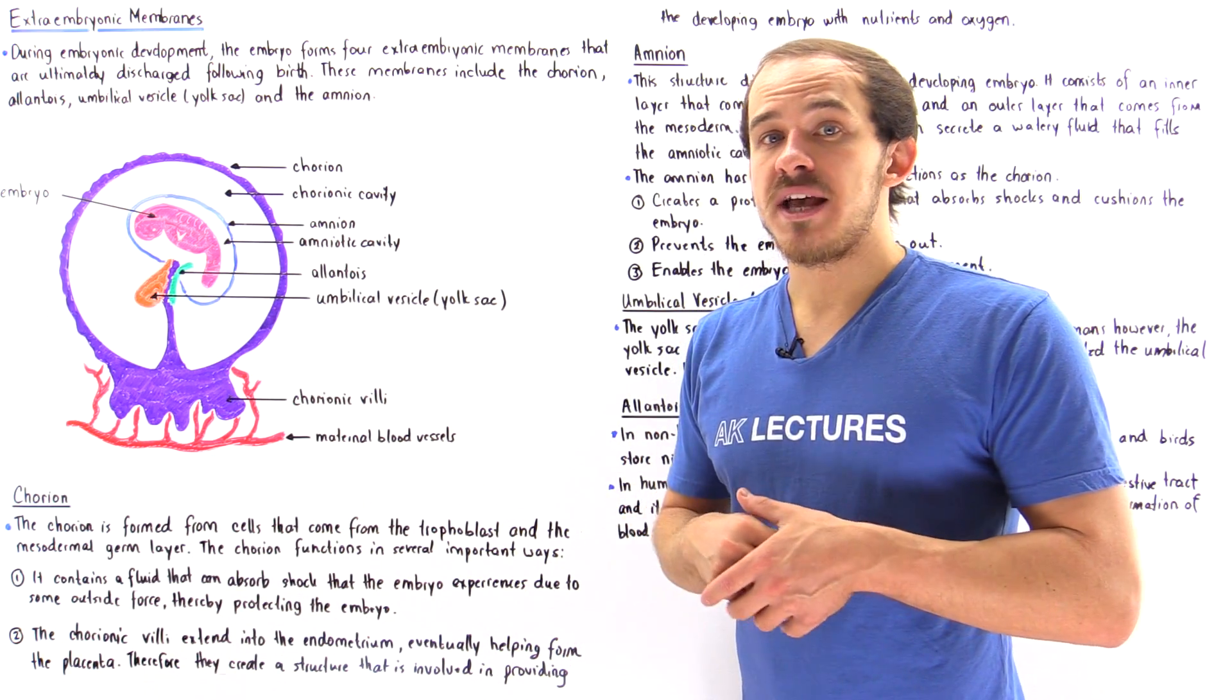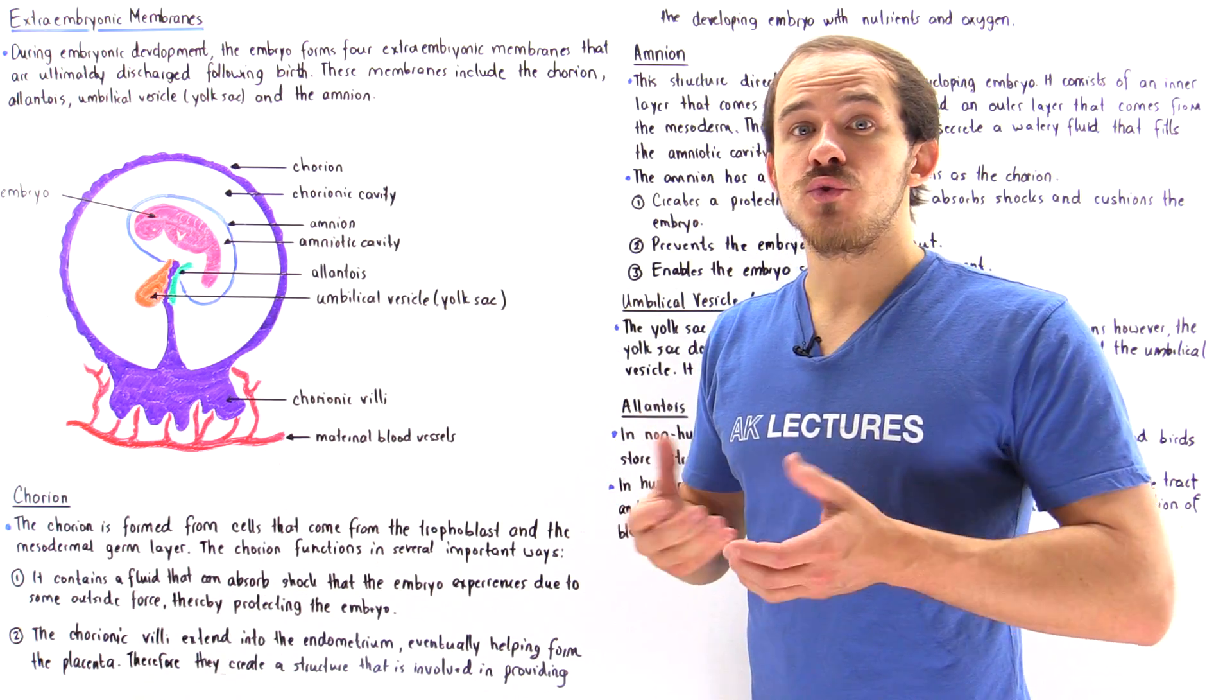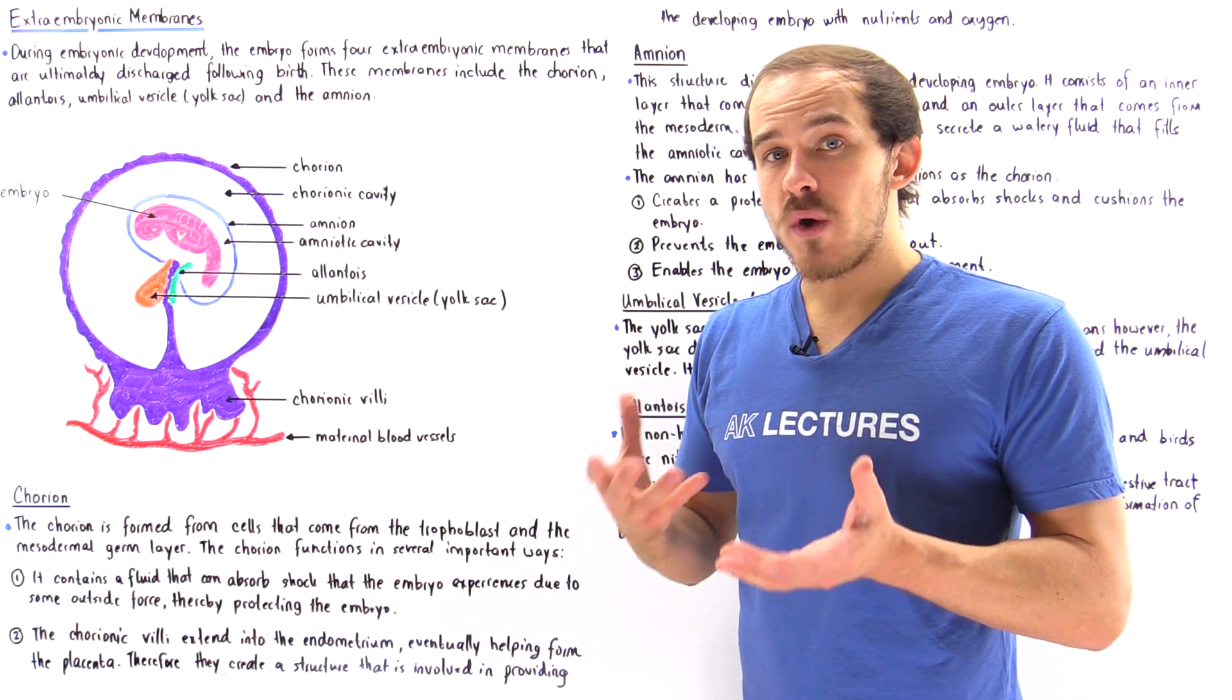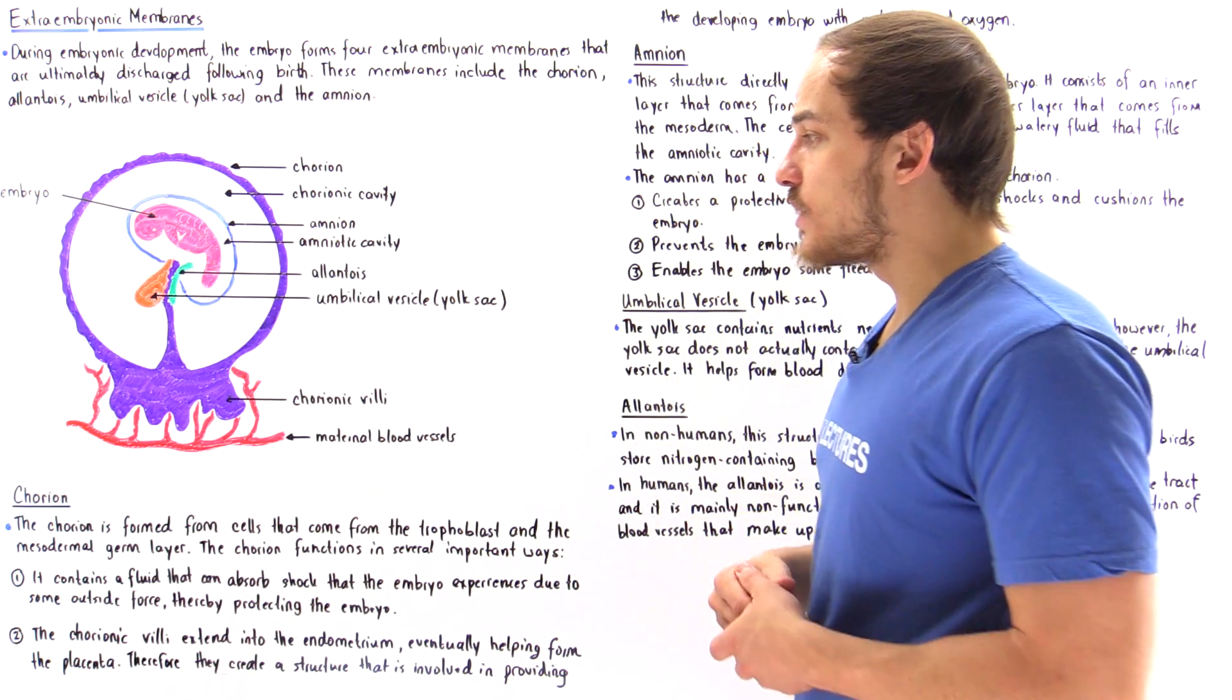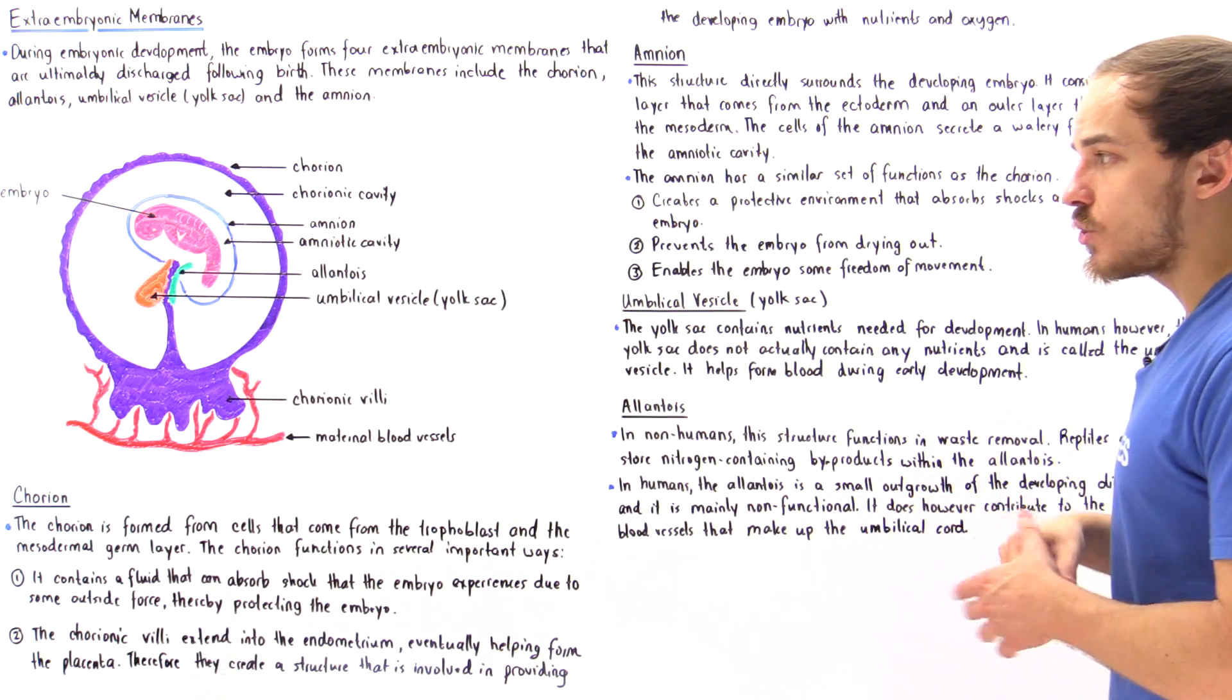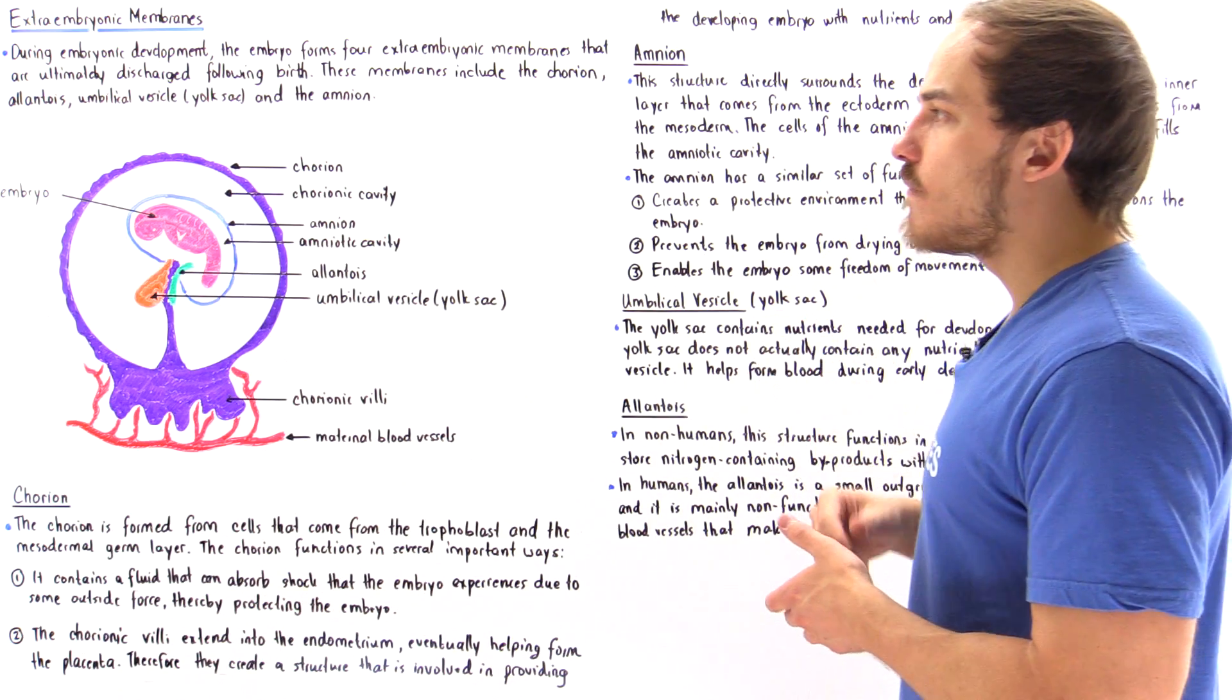And the placenta plays a role in exchanging the nutrients, the oxygen and the waste products between that developing fetus, developing embryo and that mother. So these are the two functions of the chorion.